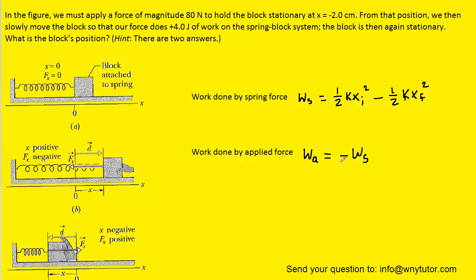And so what we can do is actually divide this equation by negative one, so that we're basically moving the negative sign over to the left hand side. And we're going to make a substitution, we're going to take this expression for the work done by the spring force, and we're going to plug it in for W sub S.